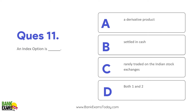Question 12: An index option is a derivative product and it is settled in cash — delivery does not happen. Unlike HDFC Bank shares which are delivered to your DMAT account via CDSL or NSDL, index options are not delivered. At expiry, your profit and loss is settled in cash. Both these points — it is a derivative product and cash settled — are correct.